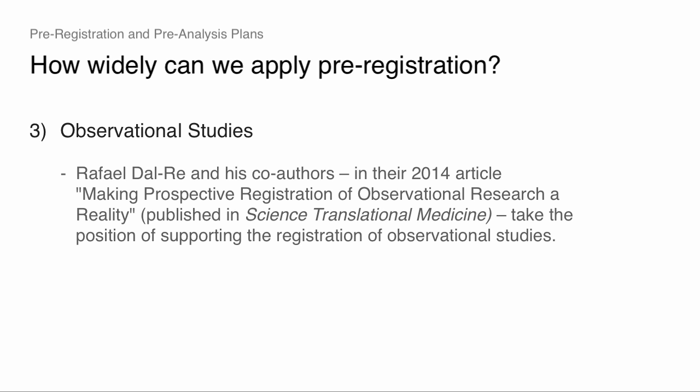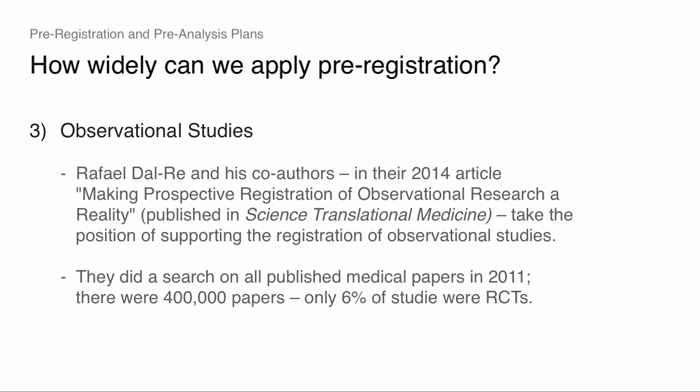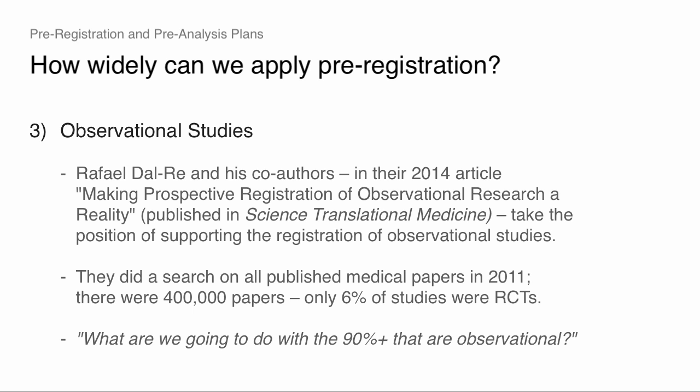Can we register these observational studies? Dal Ray et al. did a search on all published medical papers in the year 2011 — there were 400,000 papers involving human data. RCTs were only 6% of studies. For those of us from outside, we think of medical research and think of RCTs — but no, over 90% were observational studies. That's where the bulk of research is. There are five or six dueling journal editorial statements in leading epidemiology journals about whether observational studies should be registered. Most journals came out and said no — they don't think it's practical. A couple came out in favor, and Dal Ray et al. come out strongly in favor.